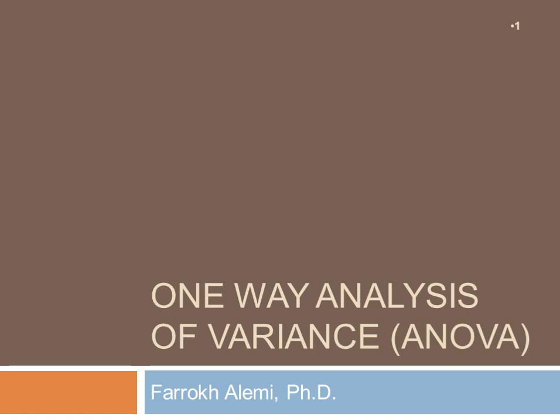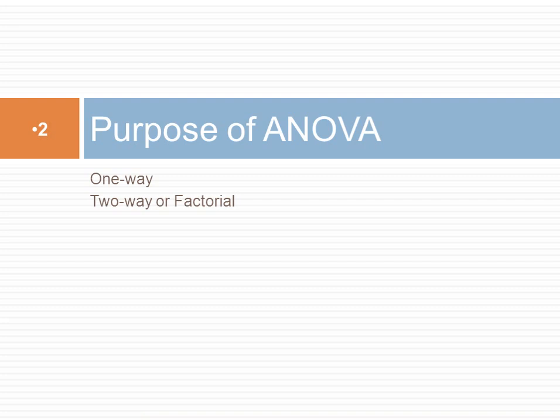Hi, this is Dr. Alemi with a brief lecture on how to compare the means of three groups, or three samples. The procedure we use is often called analysis of variance, or ANOVA for short. We are using a one-way analysis of variance to compare three or more groups defined by a single measure that they differ. Sometimes there are multiple measures that the groups differ on, and those are called factorial analysis of variance, or two-way or higher ways of doing analysis of variance.